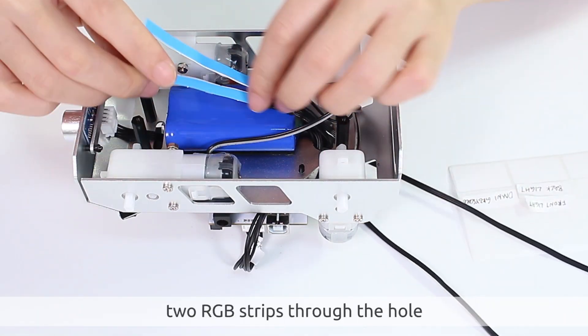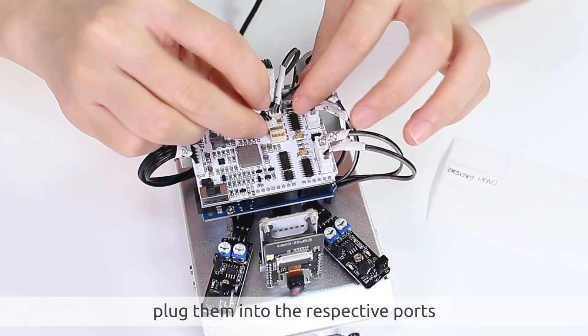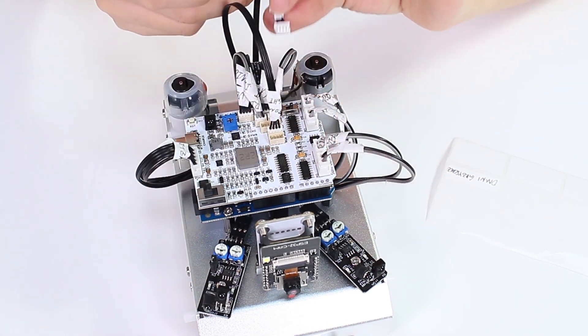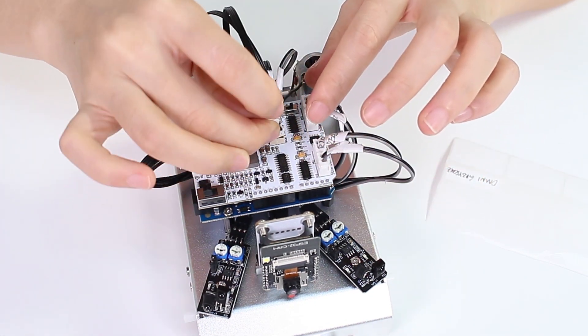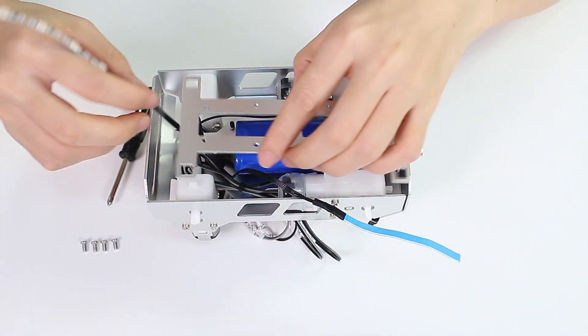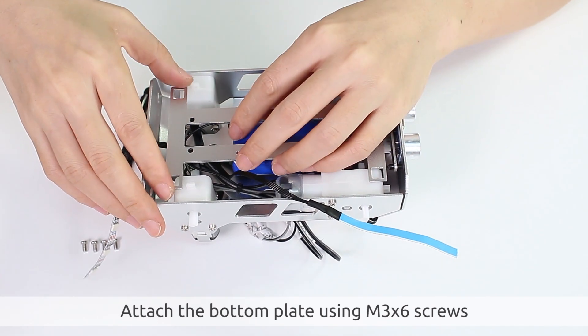After passing the wires of the two RGB strips through the hole, plug them into the respective ports. Attach the bottom plate using M3 x 6 screws.